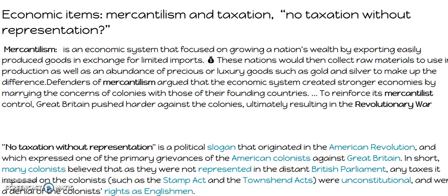Economic items — mercantilism. I've mentioned it a number of times. I didn't go into great detail because you should have learned this last year, but it's an economic system that focused on growing a nation's wealth by exporting easily produced goods in exchange for limited imports. Something like timber or cotton would get sent to England, then turned into textiles or furniture, and sent out onto the free market. These nations collected raw materials to use in production, as well as precious or luxury goods like gold and silver. Defenders of mercantilism argue the system created a stronger economy by marrying the concerns of colonies with those of the founding countries. To reinforce its mercantilist control, Great Britain pushed harder against the colonies, ultimately resulting in the Revolutionary War.